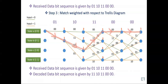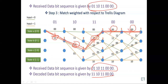After checking all combinations, we find the shortest path. The weights accumulate as we traverse: 1, 1+1=2, 2+1=3, 3+1=4, 4+1=5. Any other path will have a higher total weight. The outputs along the shortest path are: 11 10 11 00 00 00. Comparing this decoded word with the received code word, we find they differ in the first (leftmost) bit, indicating an error occurred in that bit.